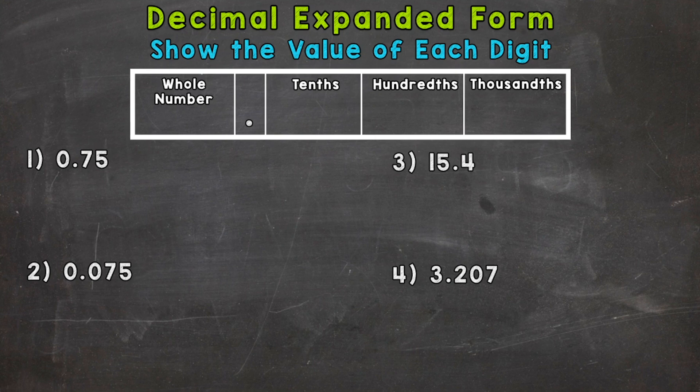Expanded form really helps our overall number sense and understanding of numbers. So let's jump into number one where we have 75 hundredths. Now there's a place value chart at the top of your screen. I'm going to place that number in the chart.